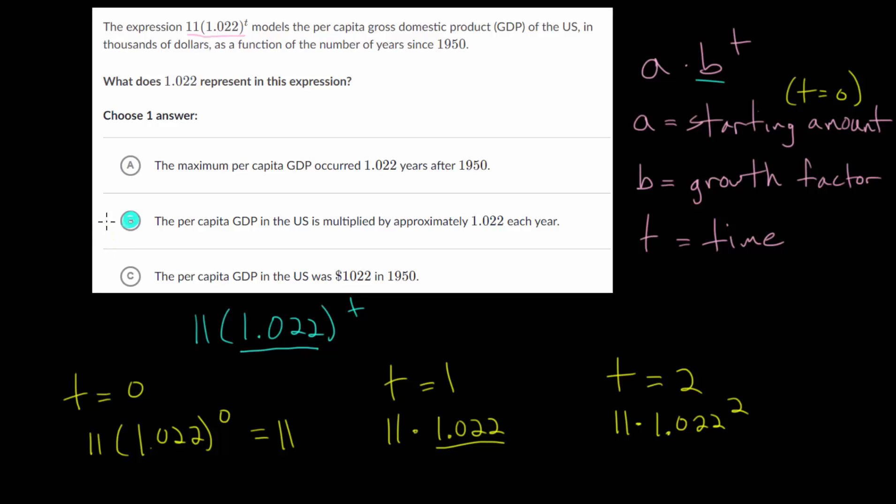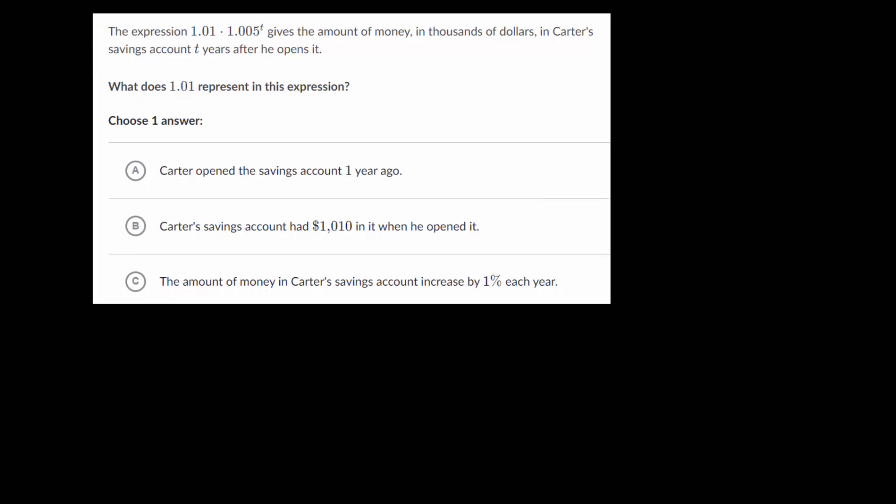Hopefully that makes a little bit more sense why B would be our final answer. Really we just want to compare these to our general formula, and that way we can go through these a little bit faster. But if you really want to check your work, you can plug in different t values, or you can make a table. Let's move on, we'll do a couple more problems.